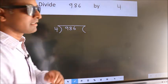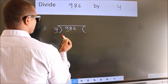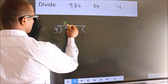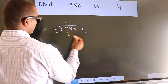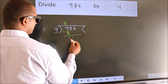Next, here we have 9, here 4. A number close to 9 in the 4 table is 4 times 2 is 8. Now we should subtract. We get 1.